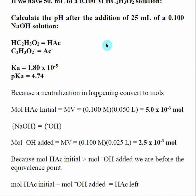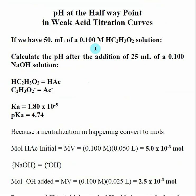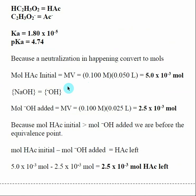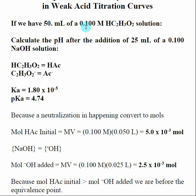When doing a titration, we're starting with a certain amount of weak acid and adding a certain amount of strong base, so there's going to be a neutralization reaction. The first thing we want to know is how many moles of each species we have initially. Moles of weak acid equals molarity times volume: 0.1 molarity times 0.05 liters gives us 5.0×10⁻³ moles.